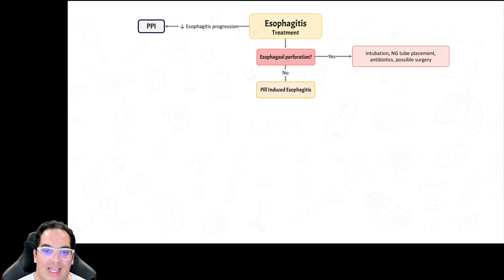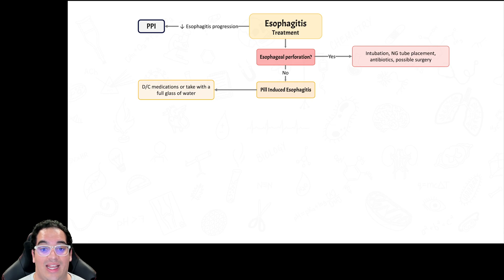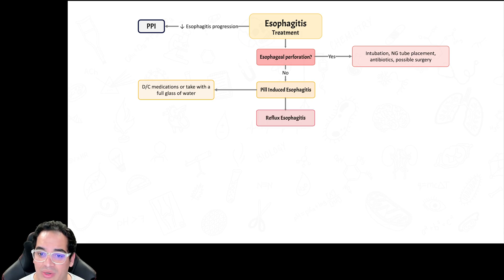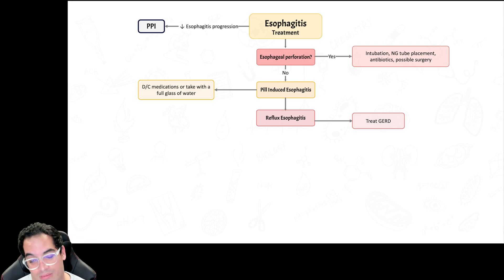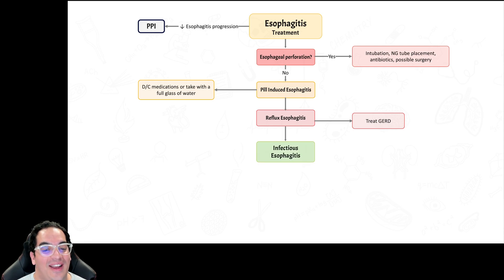For pill-induced esophagitis: discontinue the offending medication or ensure the patient takes it with a full glass of water so it doesn't get stuck. For reflux esophagitis: treat the GERD — increase lower esophageal sphincter tone, decrease intragastric pressure, decrease hydrochloric acid production, treat the hiatal hernia if present, and consider Nissen fundoplication for refractory cases.